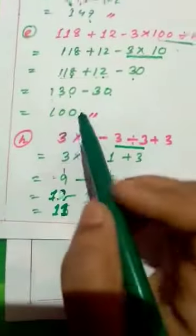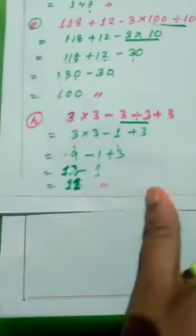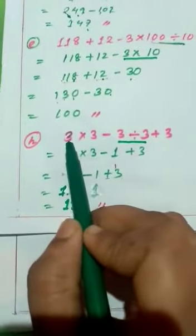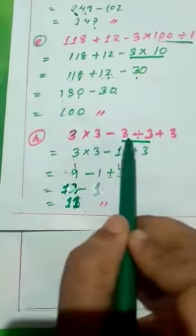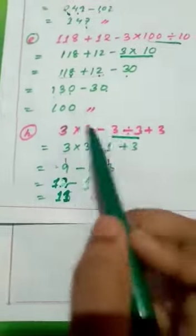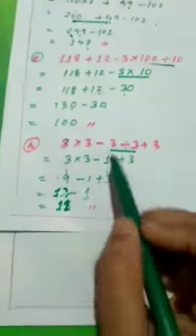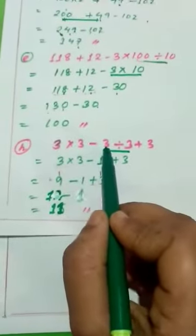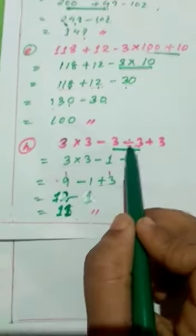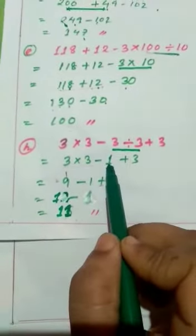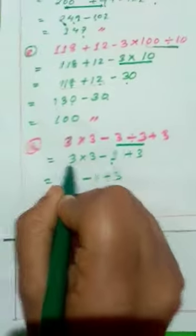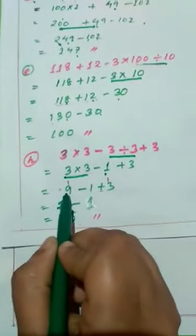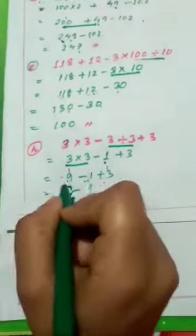Now I'm going to show you question (h). You may get puzzled by this type of question because all the digits are the same: 3 into 3 minus 3 divided by 3 plus 3. We start simplifying by doing division first: 3 divided by 3 equals 1. I have written 1 here. Now multiplication: 3 into 3 is 9.